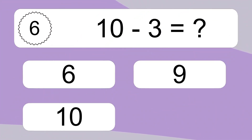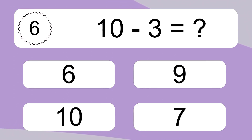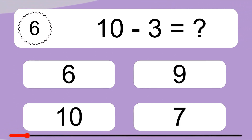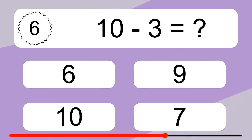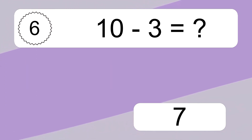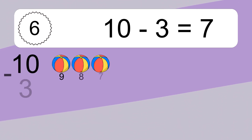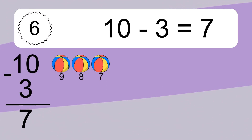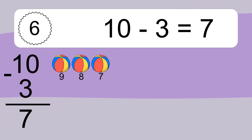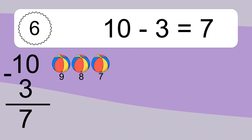10 minus 3 equals what? 10 minus 3 equals 7. Let's count it. 9, 8, 7.